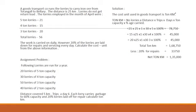There is one assignment problem for your practice. The problem is: following lorries are run for a year — 20 lorries of 5-ton capacity, 30 lorries of 4-ton capacity, 50 lorries of 3-ton capacity, 40 lorries of 2-ton capacity. Distance covered 5 kilometers, trips a day 6. Each lorry carries garbage to 60% of capacity and 20% of lorries are laid off for repairs. Calculate ton-kilometers. Note that the percentage carried is to be taken as 60% as clearly given in the problem. Try to solve this problem.